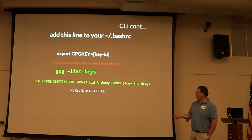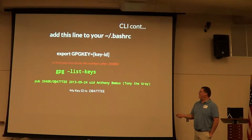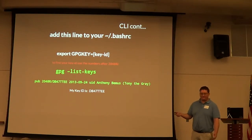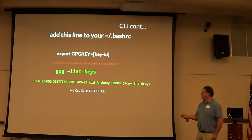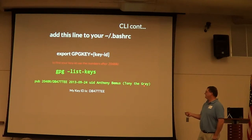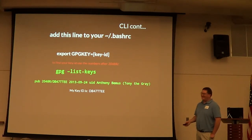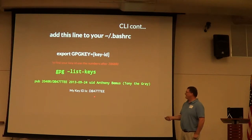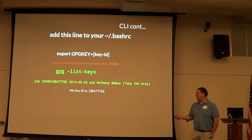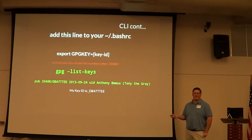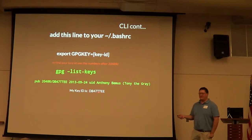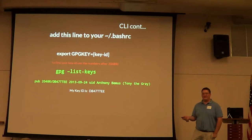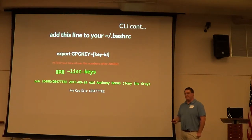It'll show you that my key is right here. My public key is using 2048-bit encryption — that's the last eight characters of the full key fingerprint. Then it shows the date it was created, my user ID, and my description. If anybody wanted to go out and find my key, you can either use the last eight characters — the key ID — or the fingerprint, and you can search by name on the key servers.